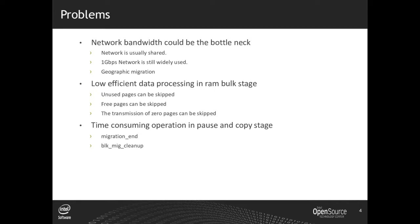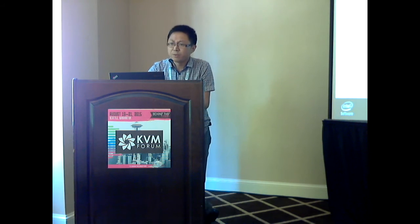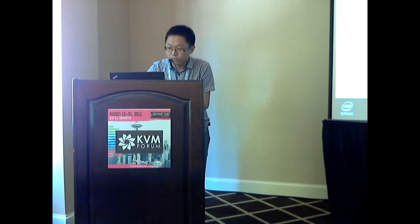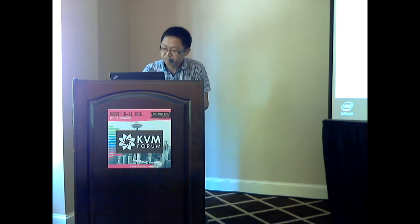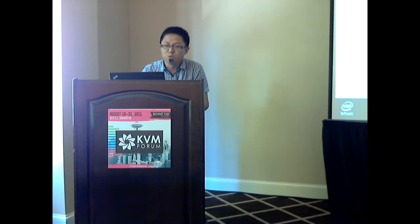This slide shows the problems we have to solve and some issues in the current QEMU implementation. The first problem is the bottleneck that affects live migration performance. In practice, the network bandwidth is most likely to be the bottleneck. Although there are some fast network products that can support 10 Gbps or 40 Gbps bandwidth, this is still true. The first reason is the network is usually shared, so we can't use the full bandwidth for live migration. The second reason is 1 Gbps network is still widely used for cost consideration.